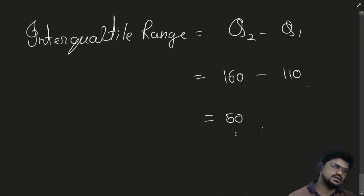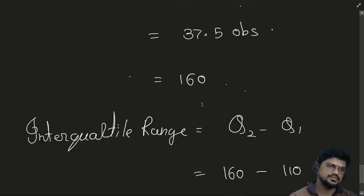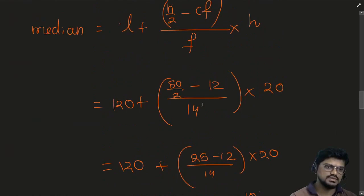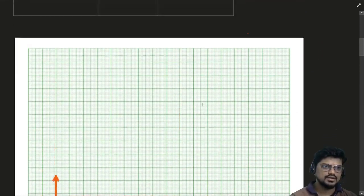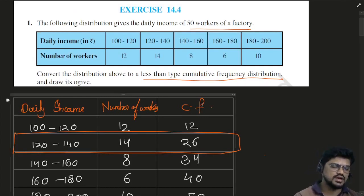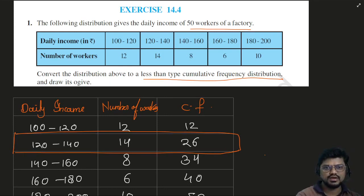In the measures of central tendency, there is one more extra thing for ICSE: to find the mode you have to use a histogram. That will be taught in the evening class. Is the cumulative frequency distribution graph, or drawing an Ogive curve, clear to everyone? Please raise your hands if you have understood.